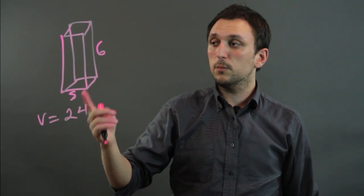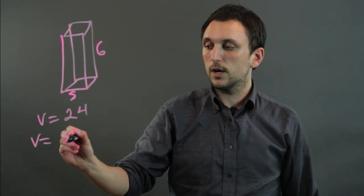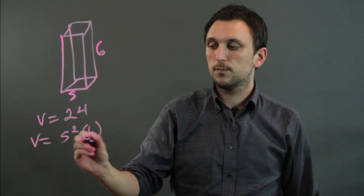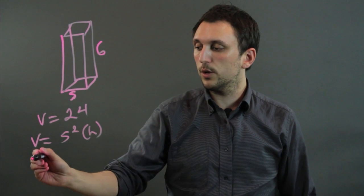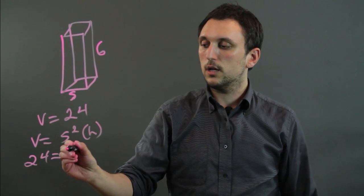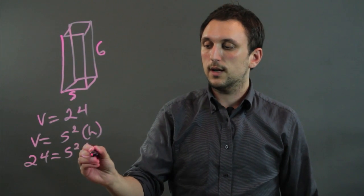Well the volume of any square prism is s squared times h. And because we know that 6 is h and v equals 24, we can say 24 equals s squared times 6.